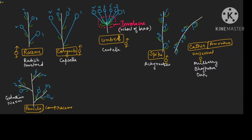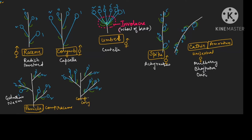Similarly, if corymb goes for branching, it forms a compound corymb. For simplicity in diagrams take only three branches with two or three bracts each. The flowers should try to come at the same level. An example of compound corymb is cauliflower, which we eat at home.